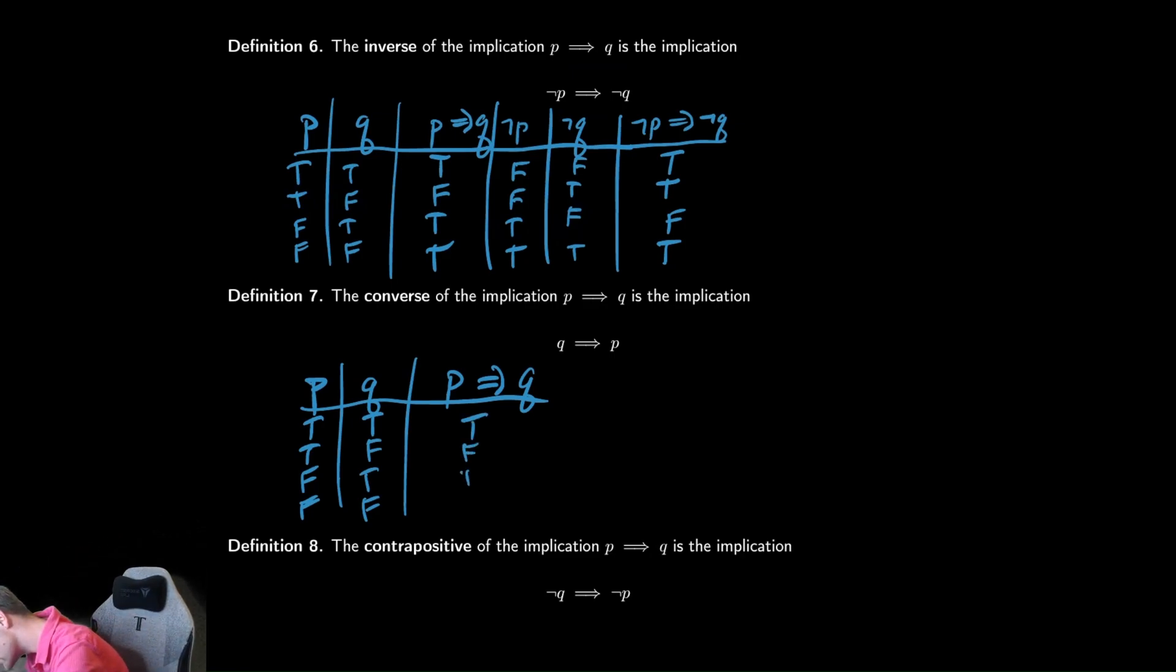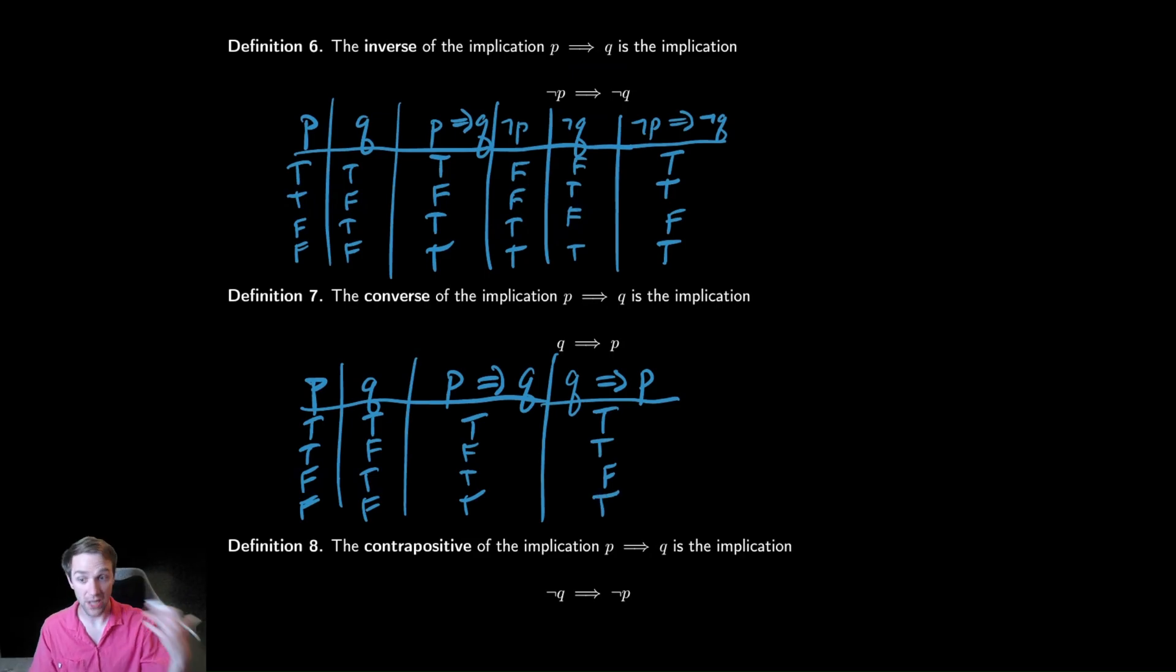So let's fill out the exact same table here like we were already doing, true, false, true, true. And then look at q implies p. And just as we mentioned before, we're looking for a column where the hypothesis is true, and the consequent there is false. So just like we saw before, this is also false when we have the third row there. So the converse and the inverse are not necessarily true if the original statement is true.